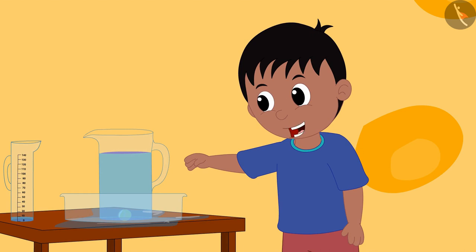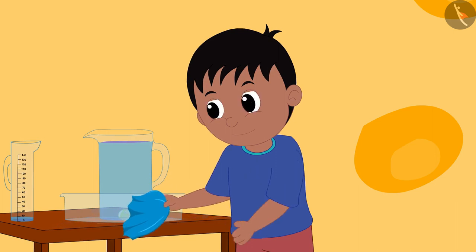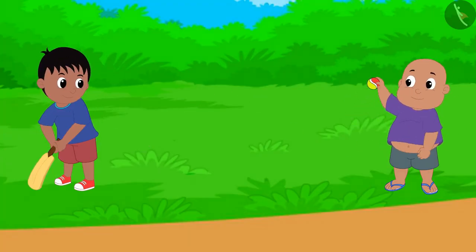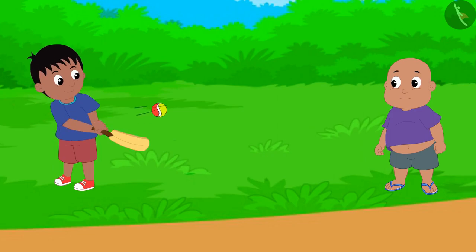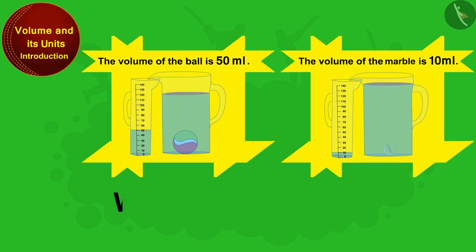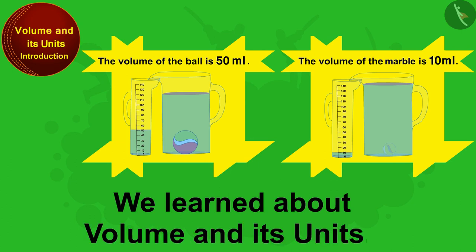Raju said, Bablu, my mother is going to come — I will quickly wipe the water on the table and then we will go out and play cricket. Raju wiped the water on the table and the two friends went to play cricket. Children, in this video we learned about volume and its units.